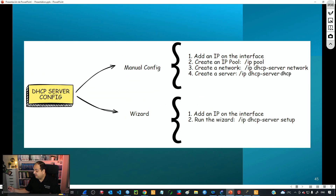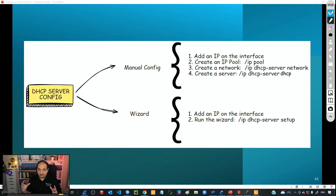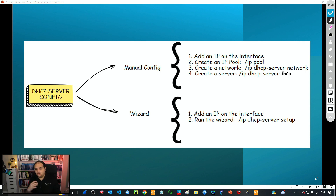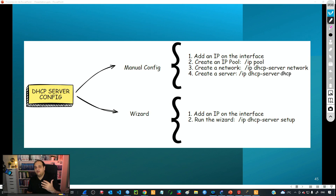So now we have a server that is providing IP addresses to users, and you know where every component is — the IP pool, the network, and the server. In our next class, we'll learn how to use the wizard. The process is going to be pretty fast, but we won't see where every component is going to be created. That's why it's important to go with the manual process first. Once you are familiar with that, you can simply use the wizard in your future deployments. Thank you, and I'll see you in the next class.